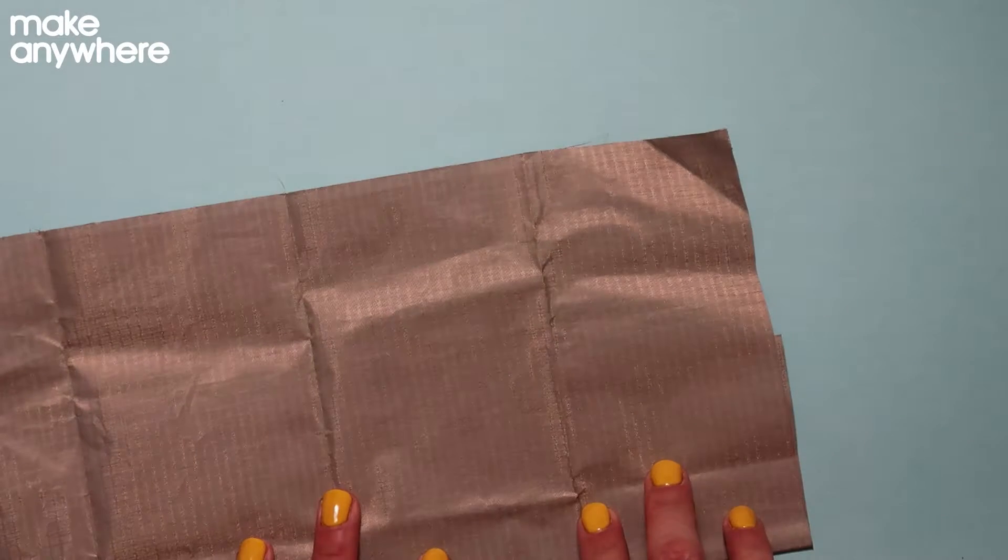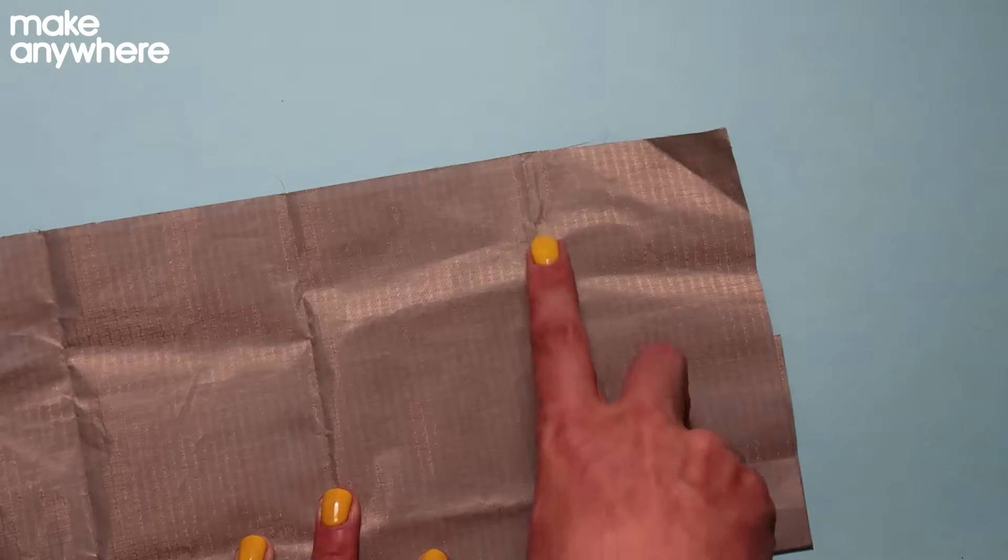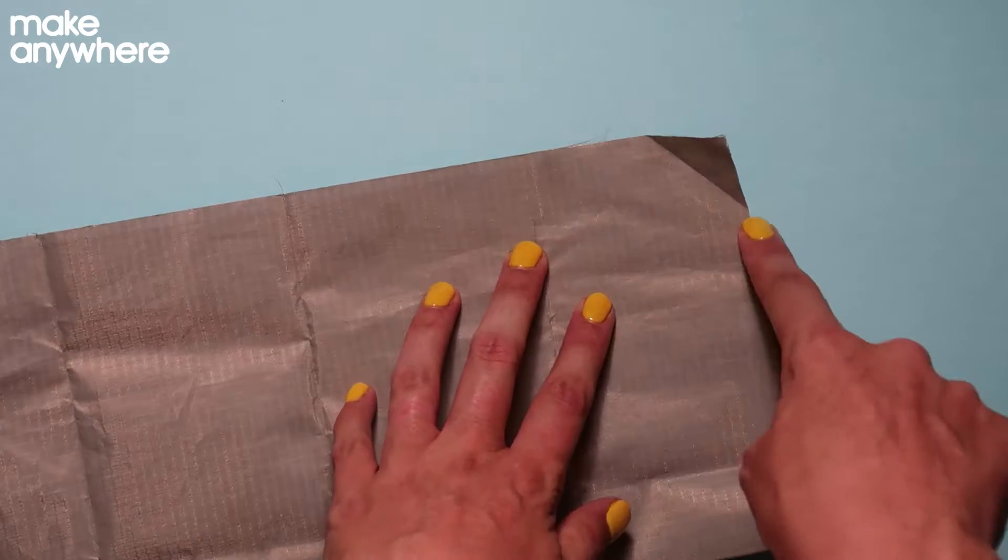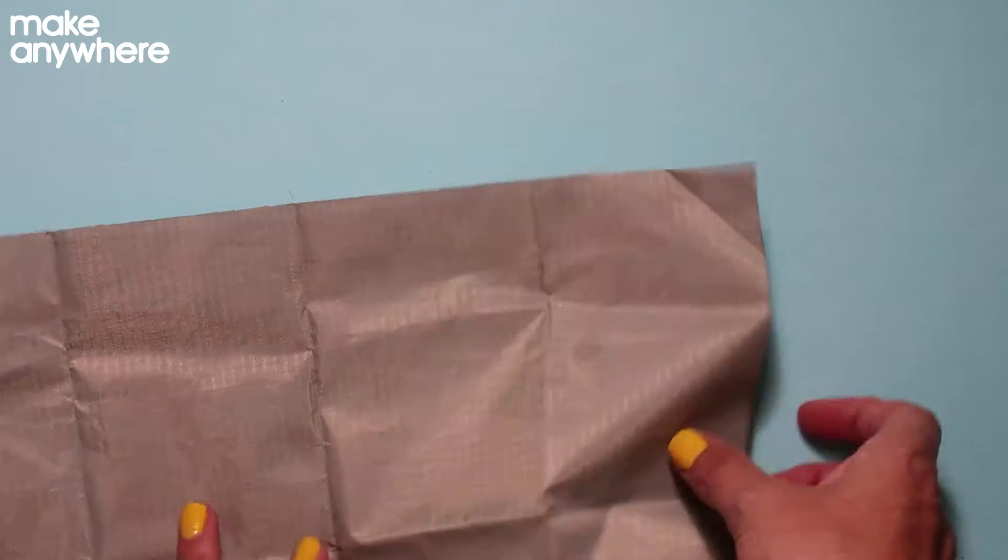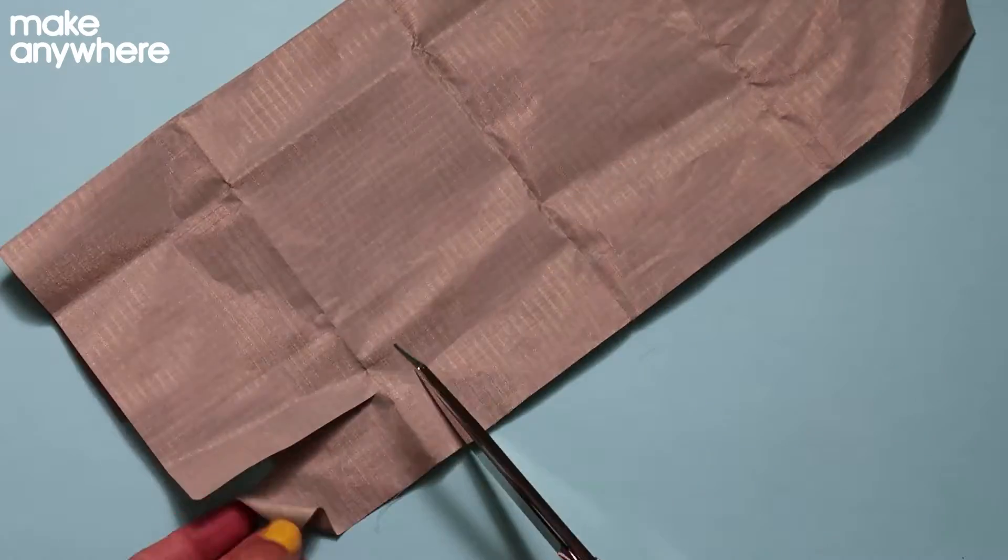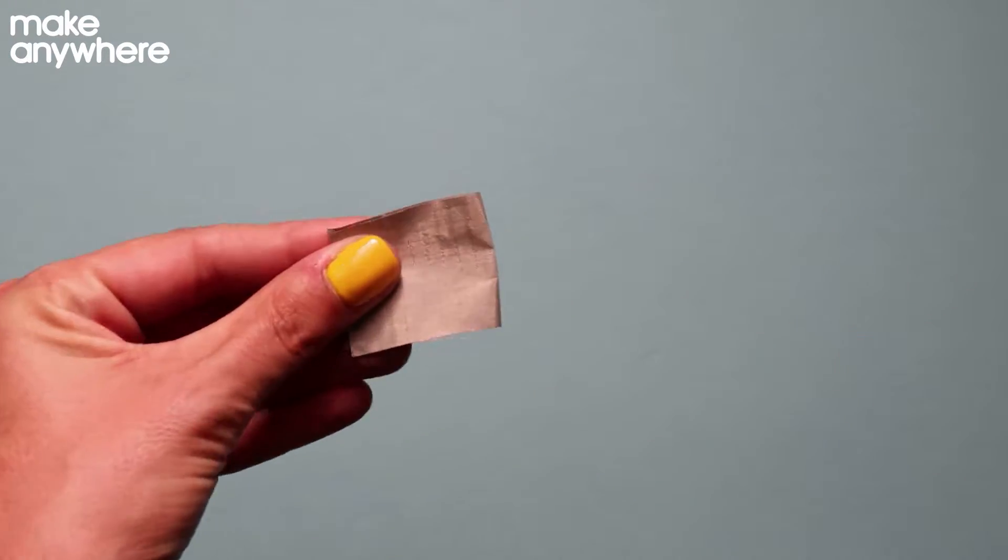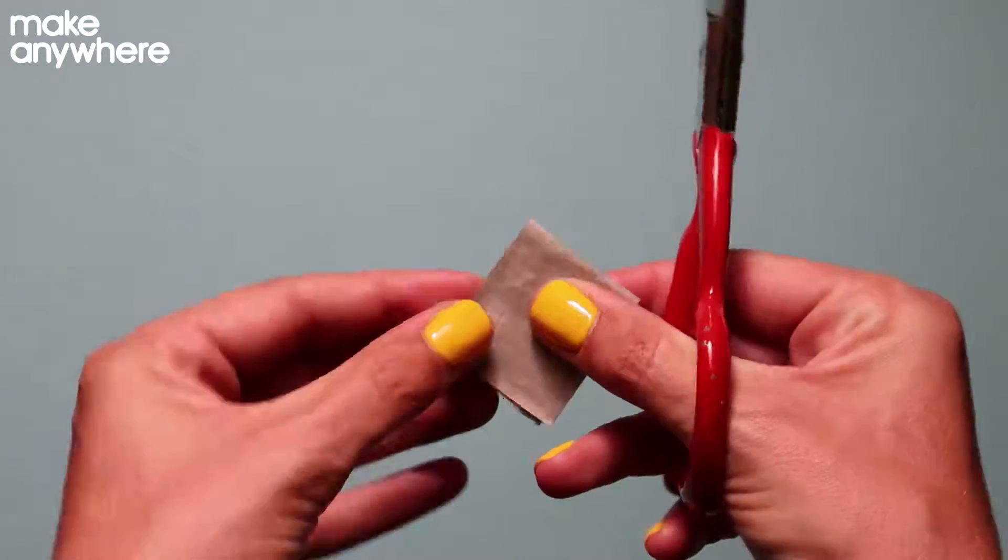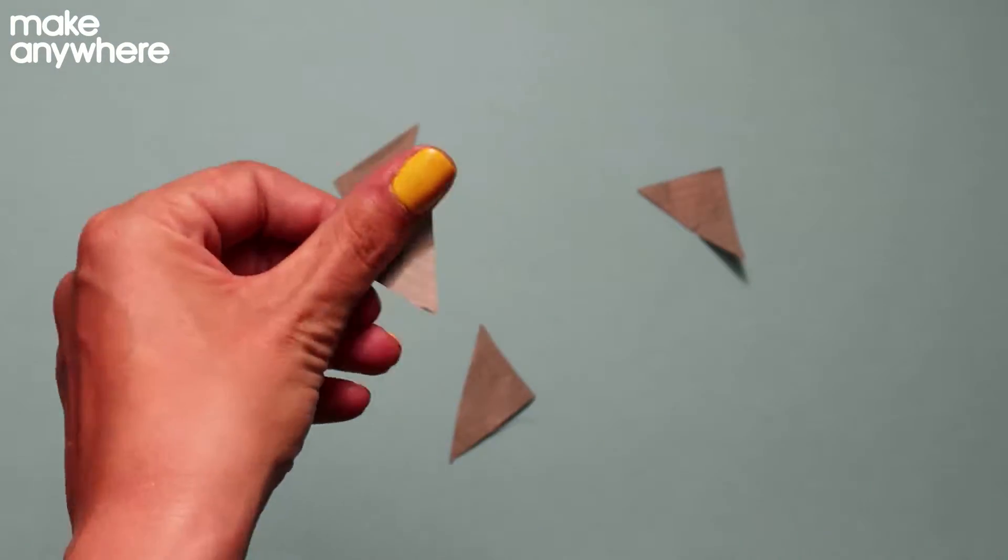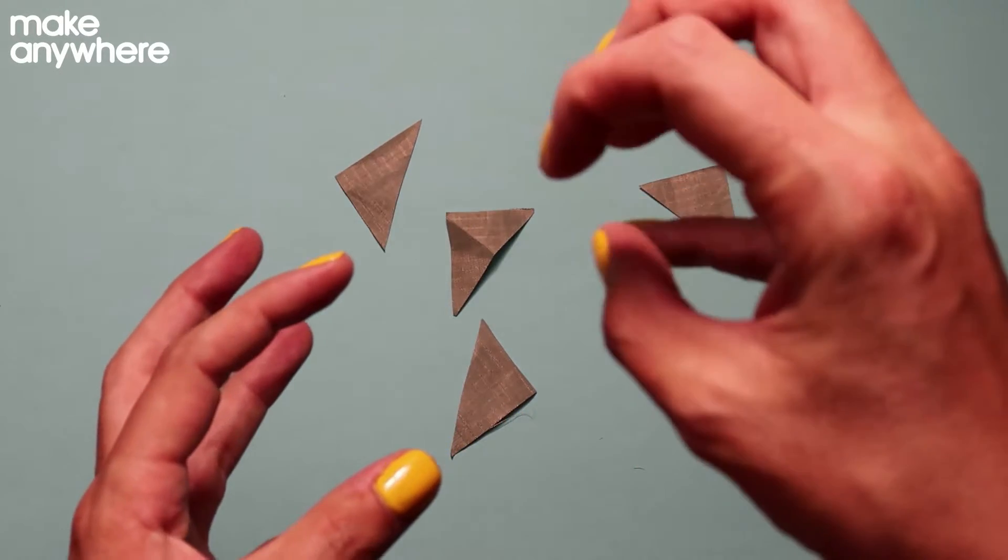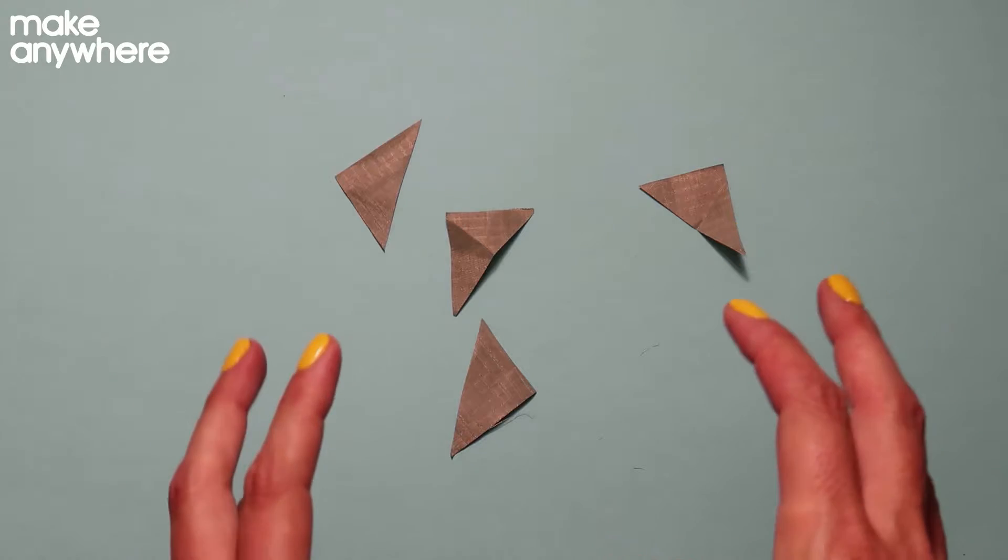The first thing you want to do is cut out four shapes out of your conductive fabric. I'm going to use little triangles so I'm going to cut out a strip and then cut my triangles. Great. These will become the little pads that my pom-pom in the middle will touch for my LED to light up.